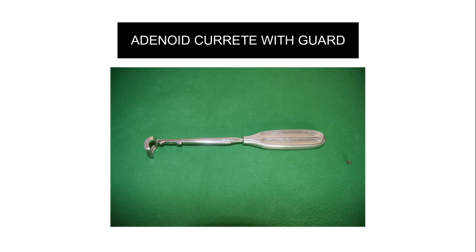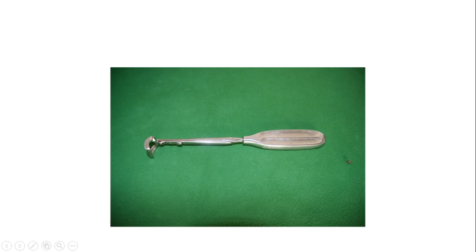This is the adenoid curette with guard, used in adenoidectomy. In adenoidectomy, we remove the hypertrophic adenoids, which are commonly seen in children with symptoms like nasal obstruction, respiratory obstruction, and Eustachian tube blockage causing middle ear infection. The guard's function is to prevent the excised adenoid tissue from dropping into the nasopharynx and then into the throat.